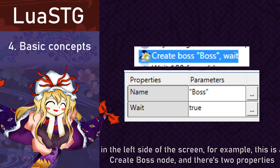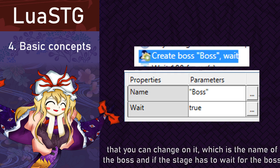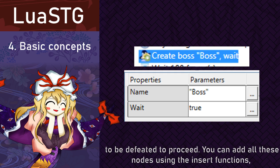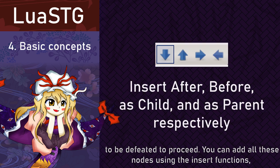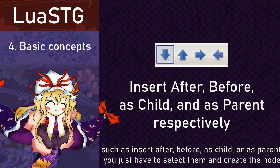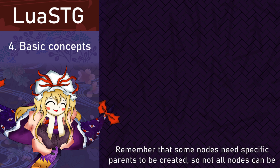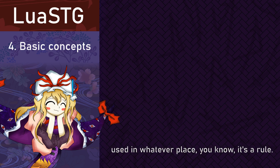For example, this is a boss create node, and there are two properties that you can change on it: the name of the boss, and whether the stage has to wait for the boss to be defeated to proceed. You can add all these nodes using the insert functions, such as insert after, before, as child, or as parent. You just have to select them and then create the node that you want. Remember that some nodes need a specific parent to be created, so not all nodes can be used in whatever place — it's a rule.